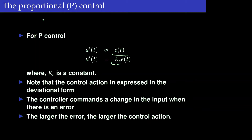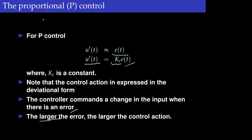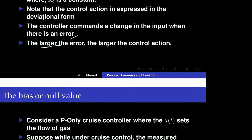The control action is expressed in terms of a deviational form of the variable. The controller changes the input when there is an error. If there is no error there will be no change in the input, and as the error gets larger and larger the control action will also be larger and larger.